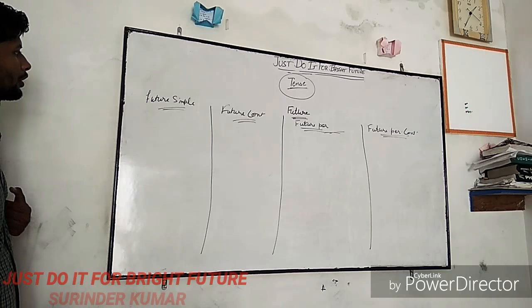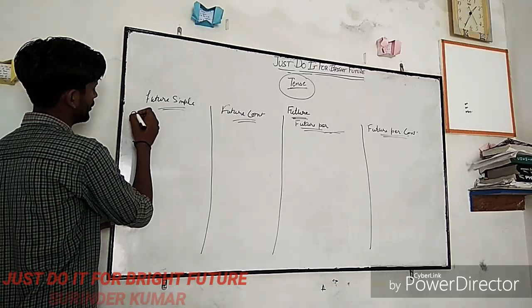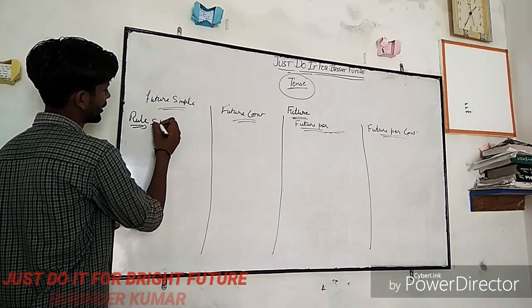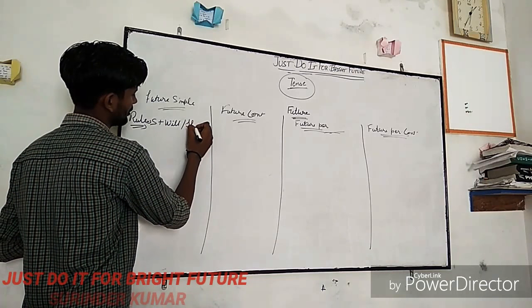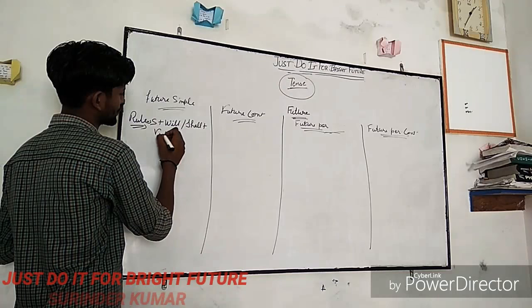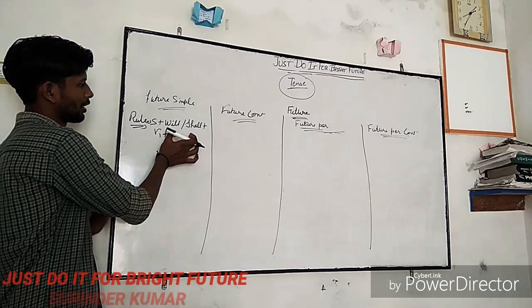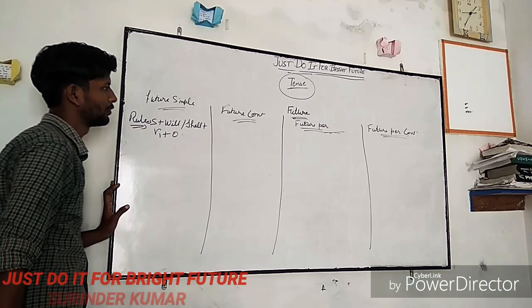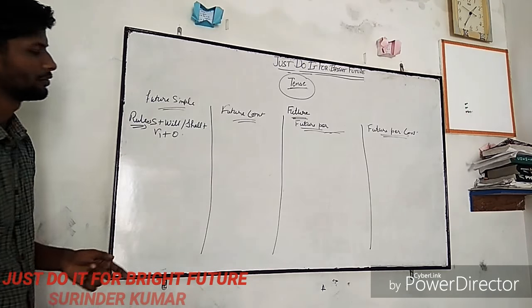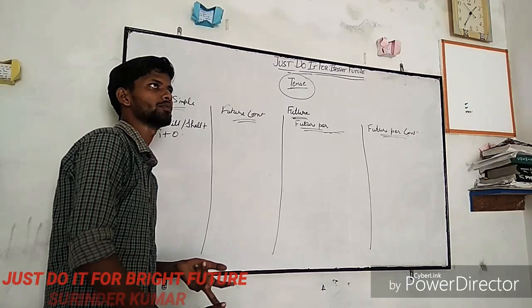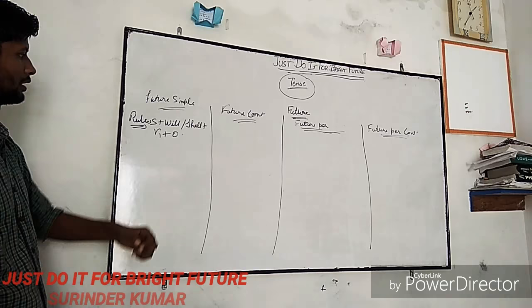Here we will talk about future simple first. In future simple, we have a rule: Subject + will/shall + first form (base verb) + object. In present simple and past simple, we do not use helping verbs, but in future simple we will be using will and shall as helping verbs.